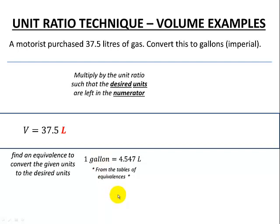So that's the unit ratio technique, the unit ratio that we're going to need to multiply by. And again we'll have the gallons in the numerator and the liters in the denominator such that our liters will cancel out.